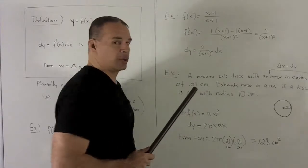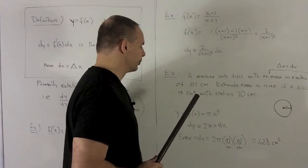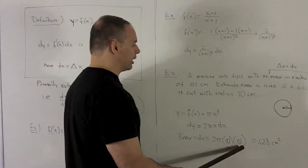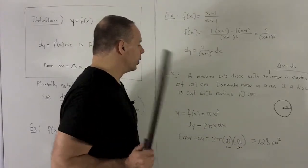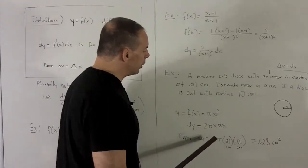So delta x is going to be our error in the radius. So that's given to me as 0.01 centimeters. All right, so that can go in right here as is. Also note, we're given x is equal to 10 centimeters. So that's going to go in there.